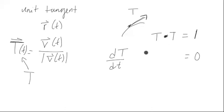And we end up getting dT/dt dot T plus T dot dT/dt. And we get the same thing twice, so we can just double it. Two dT/dt dot T is equal to zero.